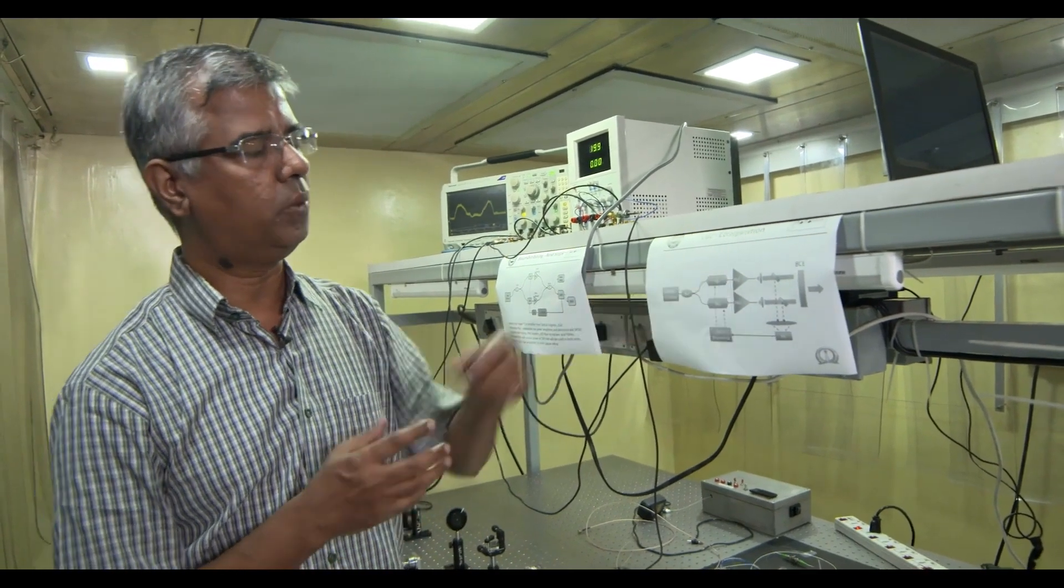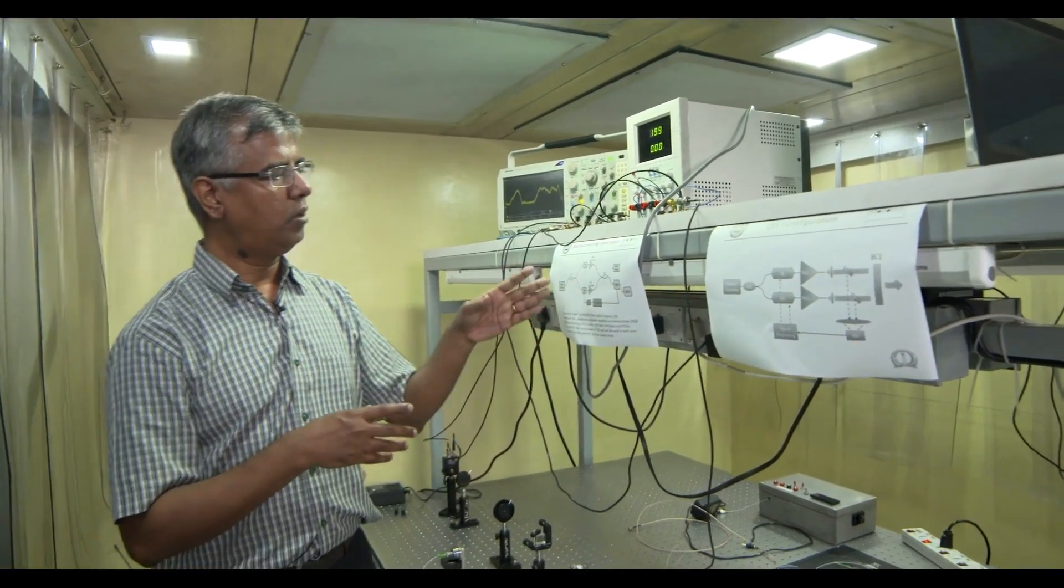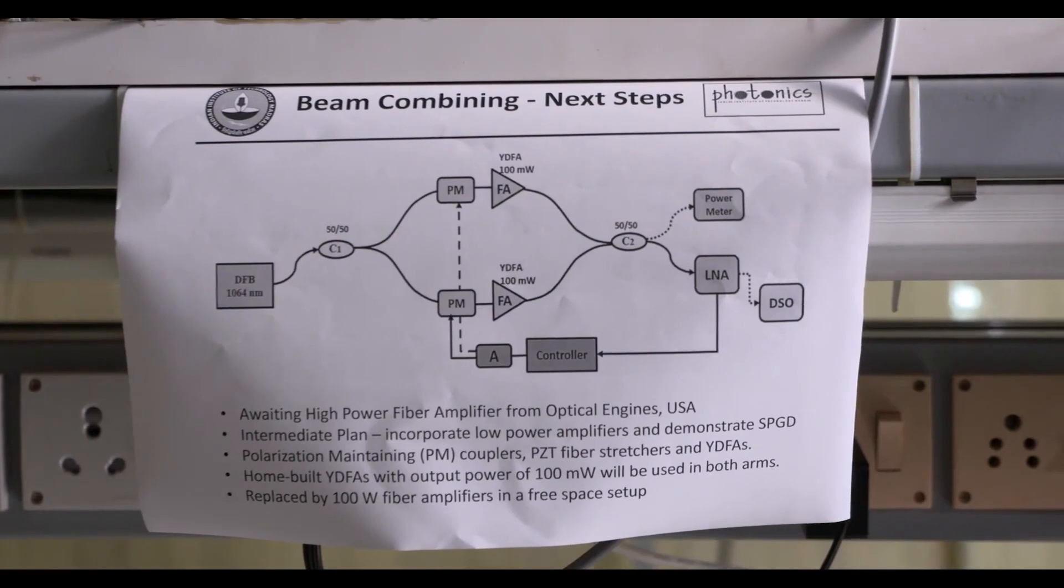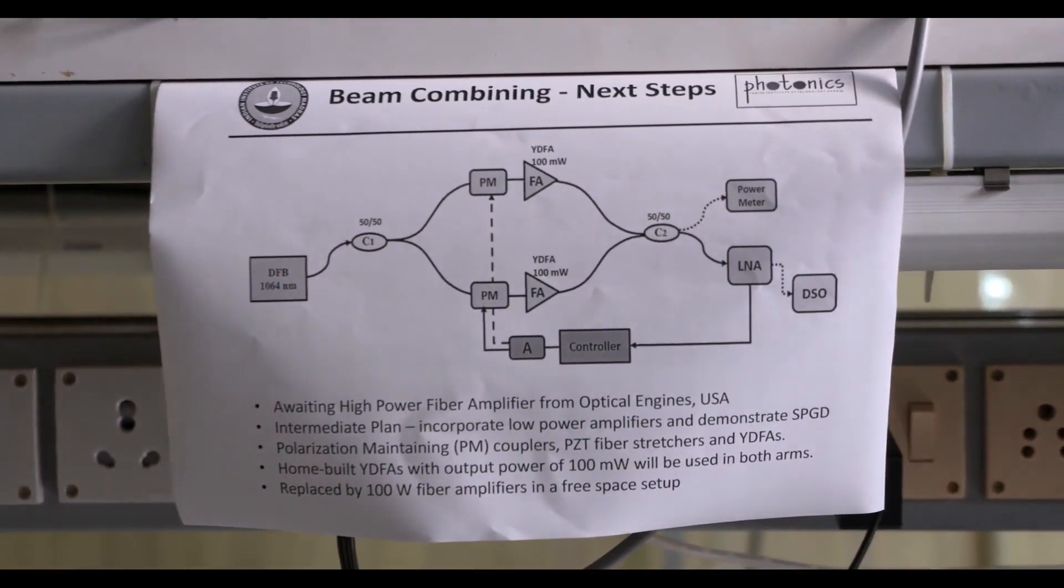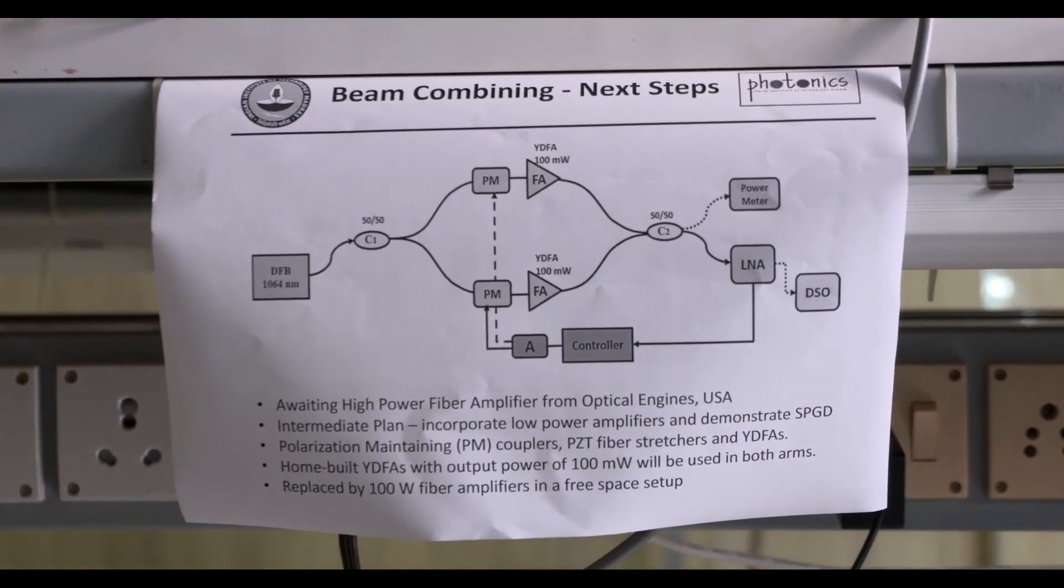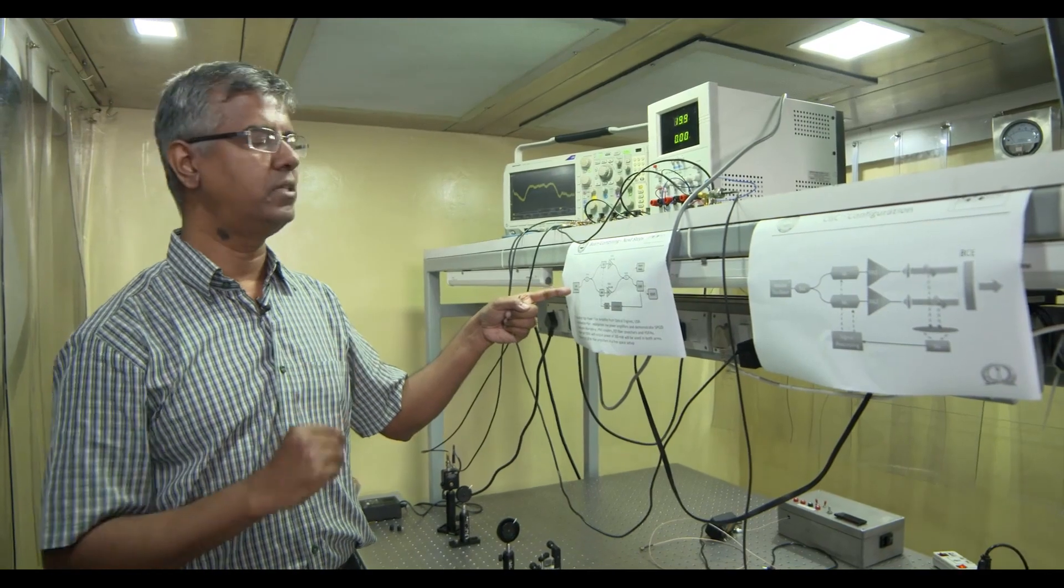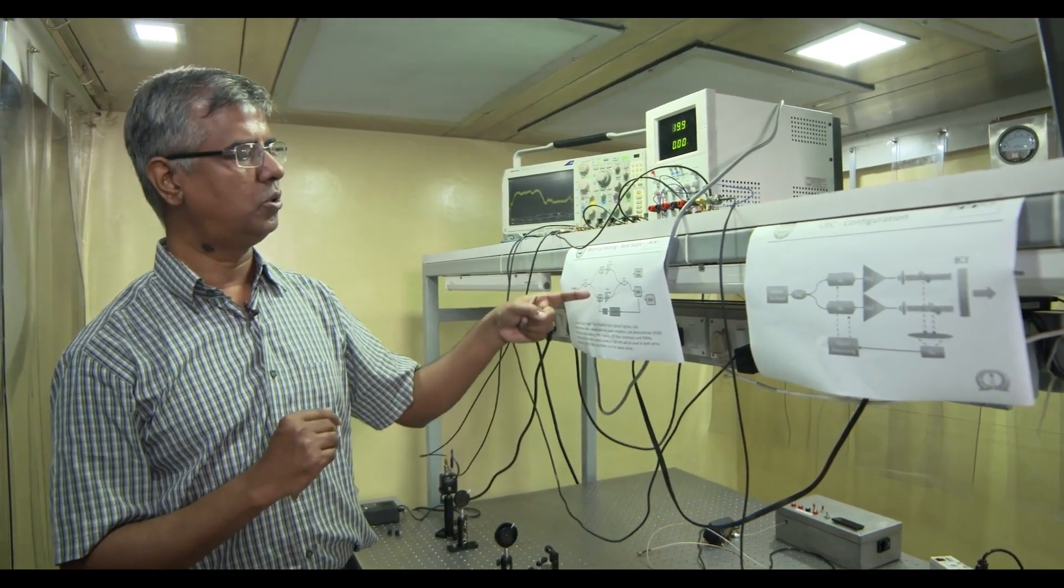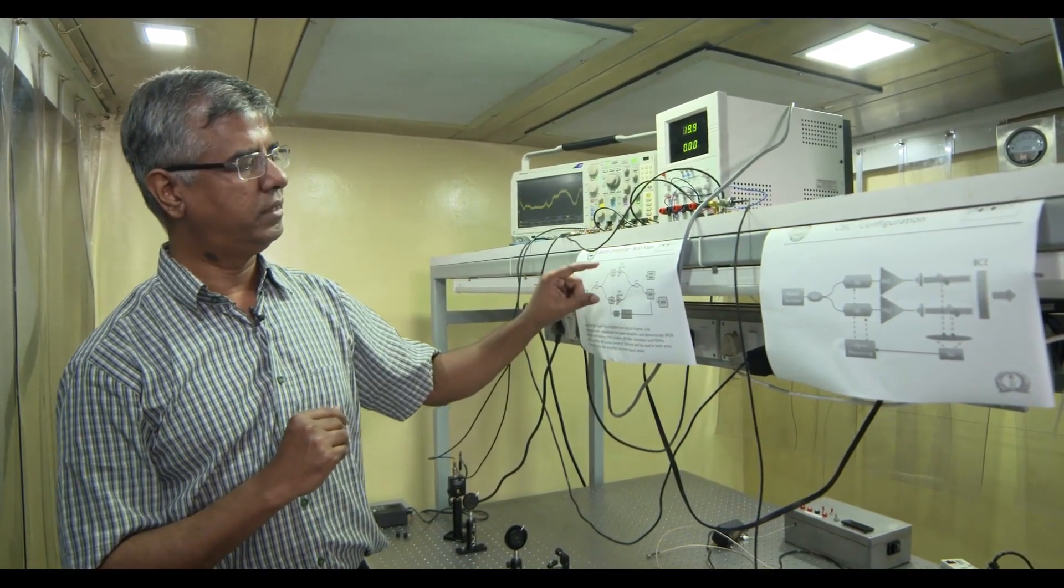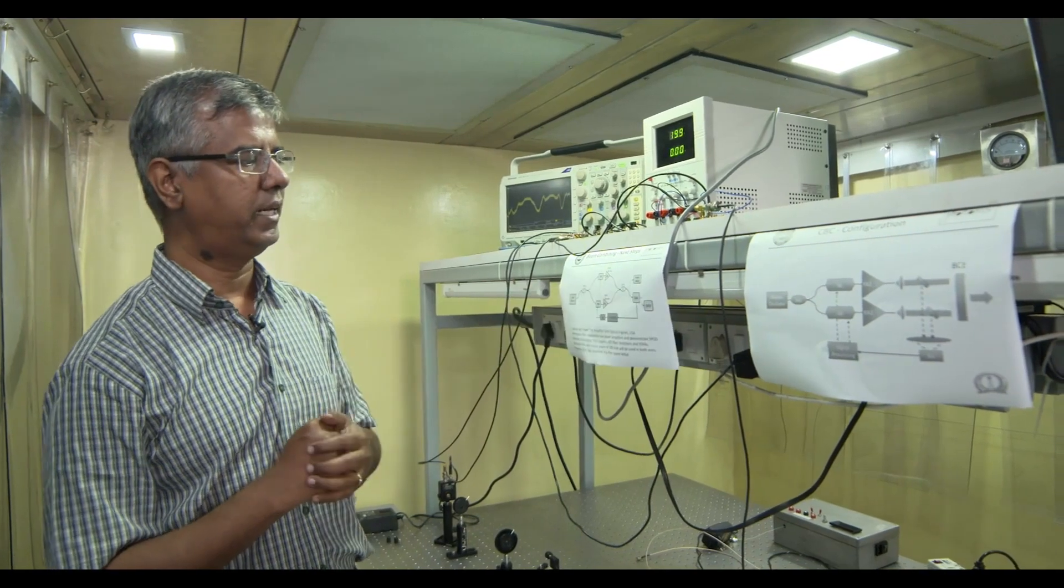So these kilowatt light sources are currently being developed. So in the meantime, what we have done is we have gone on to a setup where instead of those high power amplifiers, we are incorporating low power amplifiers. And so essentially we start from a narrow line width source, low power source, few tens of milliwatts, split them into two parts, go through two phase manipulating elements, then go through the amplifier, then we are combining them.